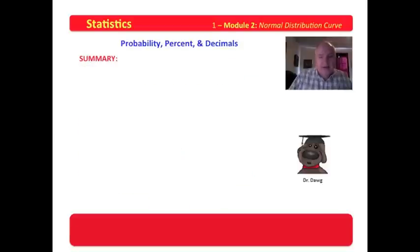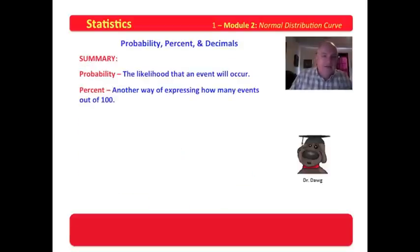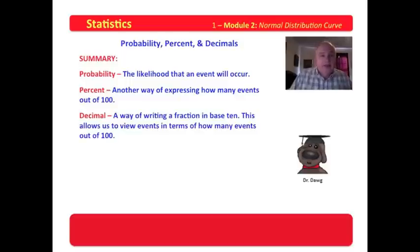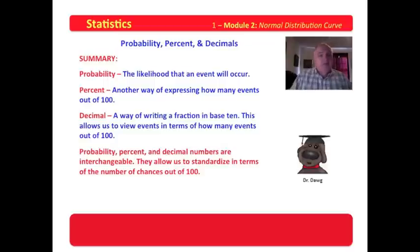And this is actually fun. In summary, probability is the likelihood that an event will occur. Percent is another way of expressing how many events out of 100 will occur. And a decimal is a way of writing a fraction in base ten. This allows us to view events in terms of how many events out of 100, if we choose to see it that way. Probability, percent, and decimal numbers are interchangeable. They allow us to standardize in terms of the number of chances out of 100.